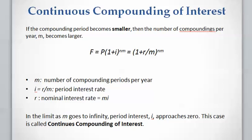If we have more and more compounding periods per year, then the compounding period becomes smaller and smaller, and the number of compounding periods per year, m, becomes larger and larger. The future value can be calculated as present value multiplied by (1 + i)^(n·m), where m is the number of compounding periods per year, i is the period interest rate which equals r divided by m, and r is the nominal interest rate. In the limit as m goes to infinity, the period interest rate i approaches zero — this is called continuous compounding of interest.